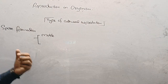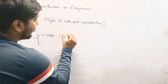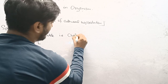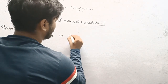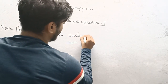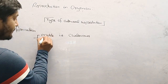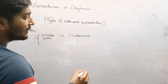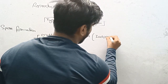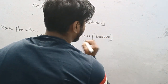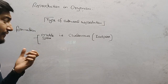Motile spores have flagella for movement to reach the female body, as seen in the case of Chlamydomonas. This type of motile spore formation is also termed as zoospores, where the male spore is motile.